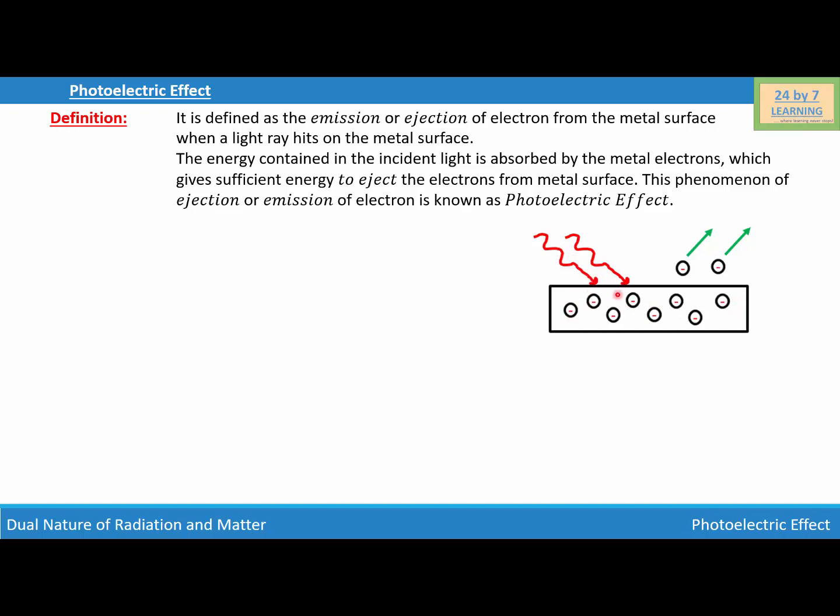When an incident light ray hits the metal surface, then if the metal surface receives the sufficient amount of energy needed to eject the electron from the metal surface, then the metal ejects the electrons and the electrons leave the metal, and this phenomenon is known as photoelectric effect.